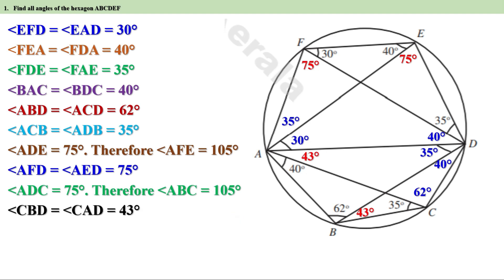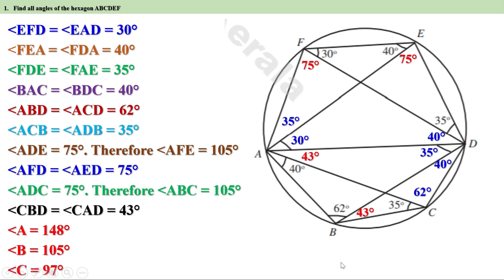Now we can find all the angles of the hexagon. Angle A equals 35 plus 30 plus 43 plus 40, which is 148 degrees. Angle B is 148 degrees. Angle C equals 35 plus 62, minus to give 97 degrees. Angle D equals 35 plus 40 plus 35 plus 40, which is 150 degrees. Angle E equals 40 plus 75, which is 115 degrees. Angle F equals 30 plus 75, which is 105 degrees.